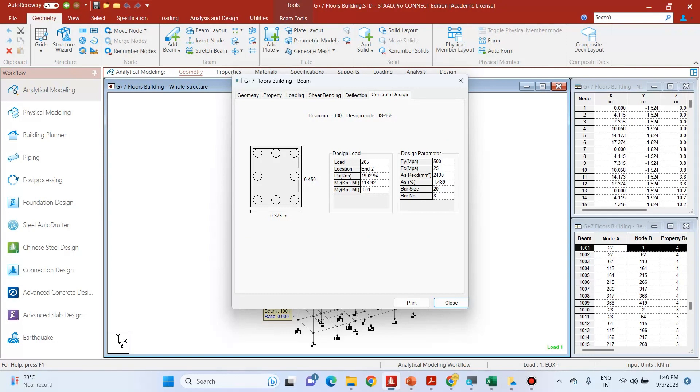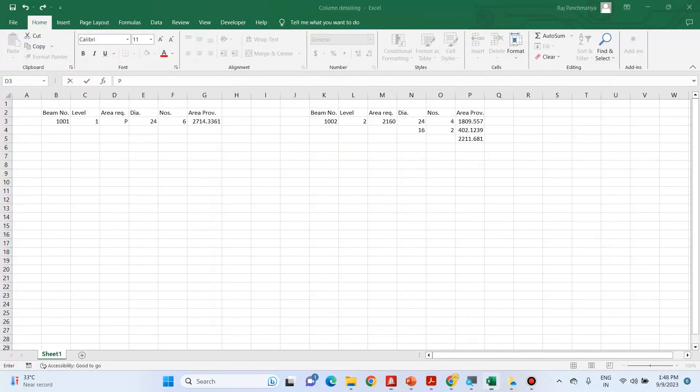Click on this concrete design tab and you can see that the STAT Pro has already detailed this column. If you see the reinforcement requirement for this column is 2430 mm2. So what we will do is that we will detail this column as per our own requirement.